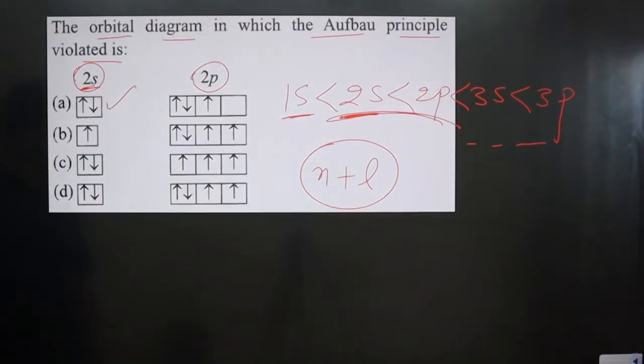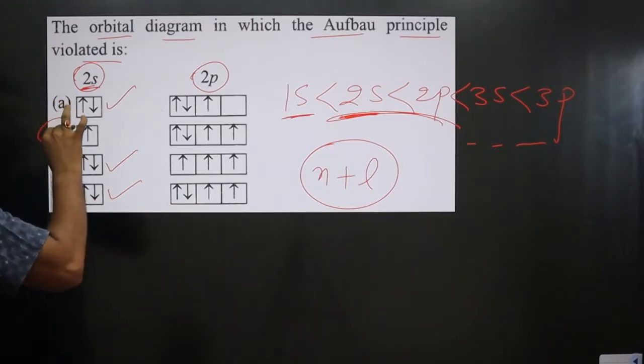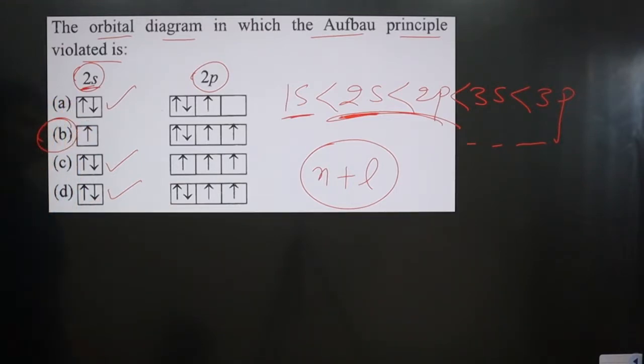So you can see, this orbital is completely filled. It is also completely filled. It is also completely filled. But in this case, you can see, it is not completely filled.